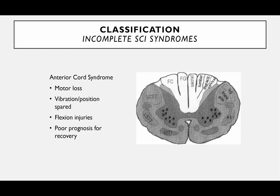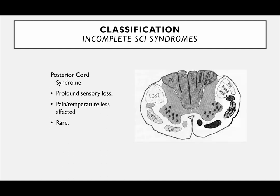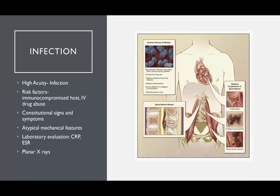Anterior cord syndrome — you don't do quite as well. There's a lot of motor loss; vibration and position sense are spared, but that's limited functional benefit. It happens from flexion injury — poor prognosis for recovery. Posterior cord syndrome, which you don't see a lot of, involves profound sensory loss; pain and temperature are less affected, and motor tracts are largely spared.